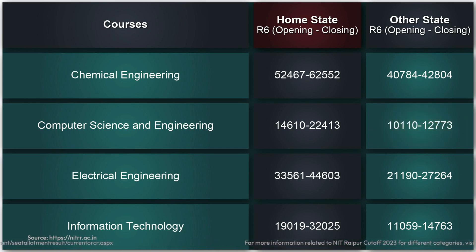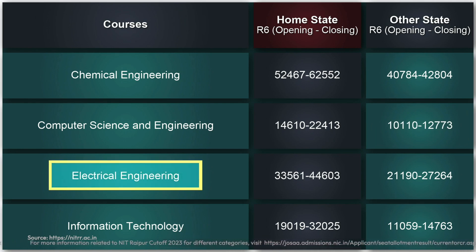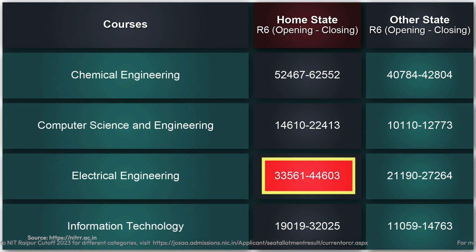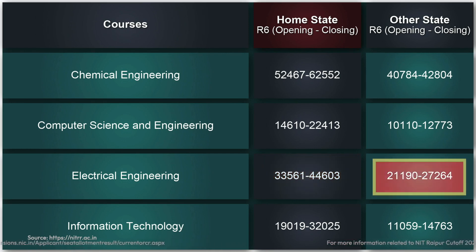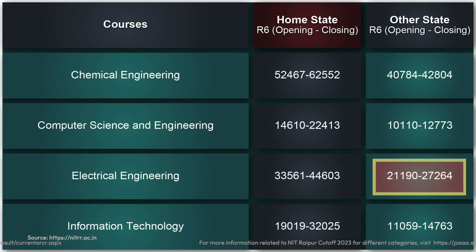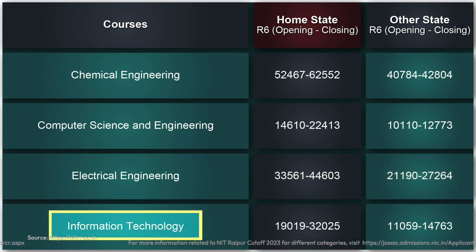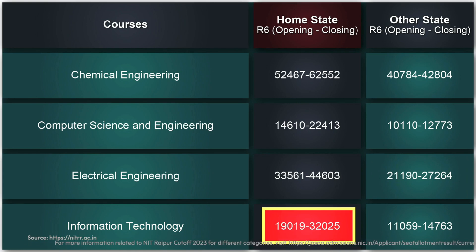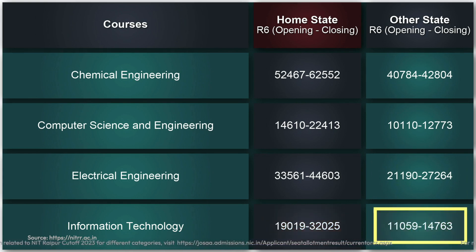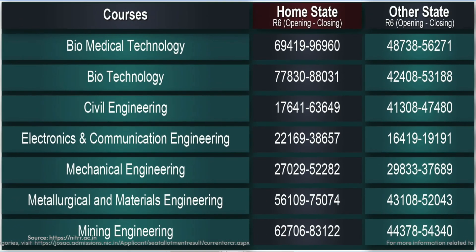So if you secure a rank around 12,000, you can still get the CSE branch here. For Electrical Engineering, home state candidates were admitted with a rank up to 44,603, and for other state candidates the closing rank was 27,264. For Information Technology, the home state closing rank was 32,025 and for other states it was 14,763.